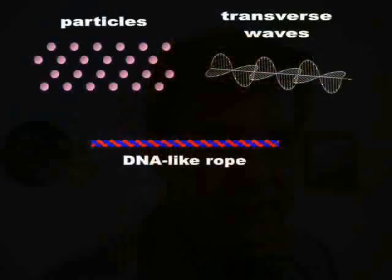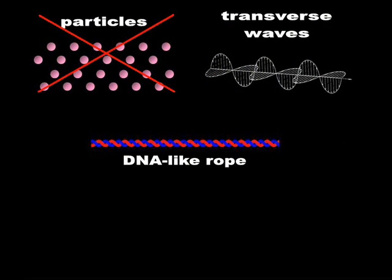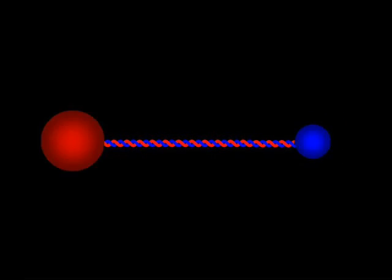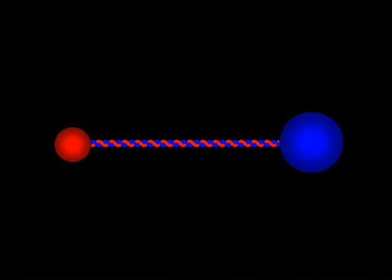In video number seven we reviewed the architecture of light. I argued that light does not consist of a stream of particles or transverse waves as orthodoxy claims. Light has the physical configuration of a DNA-like rope. This rope permanently unites any two atoms of the universe. Light consists of a torsion running along the rope.